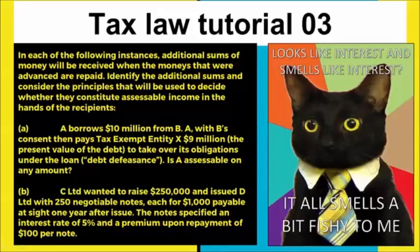Now this is one of the trickier parts of the subject, at least conceptually — particularly for those not involved in economics or finance. This is the idea of debt defeasance, where we have debts and are making arrangements with third parties and reaping some form of tax benefit as a result. We're also going to be looking at discounts and premiums. My advice on questions like this is to take your time, carefully read through them, and try to work out who the parties are, where the money's going, and why.